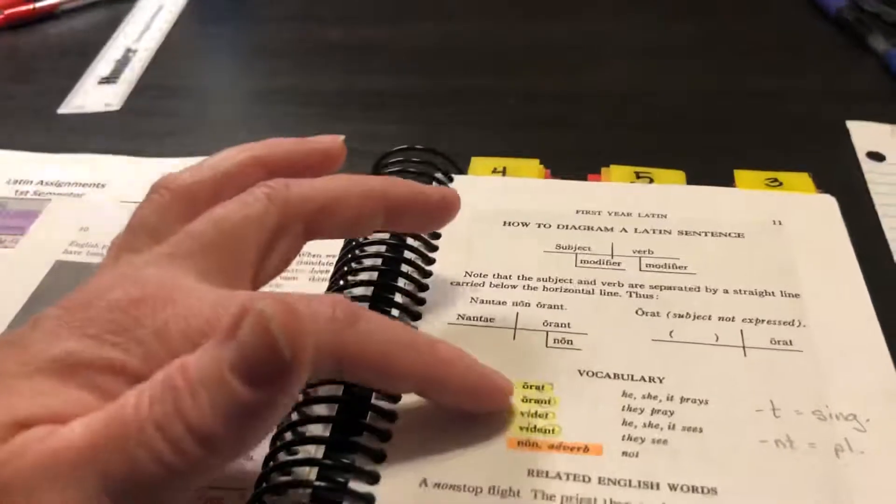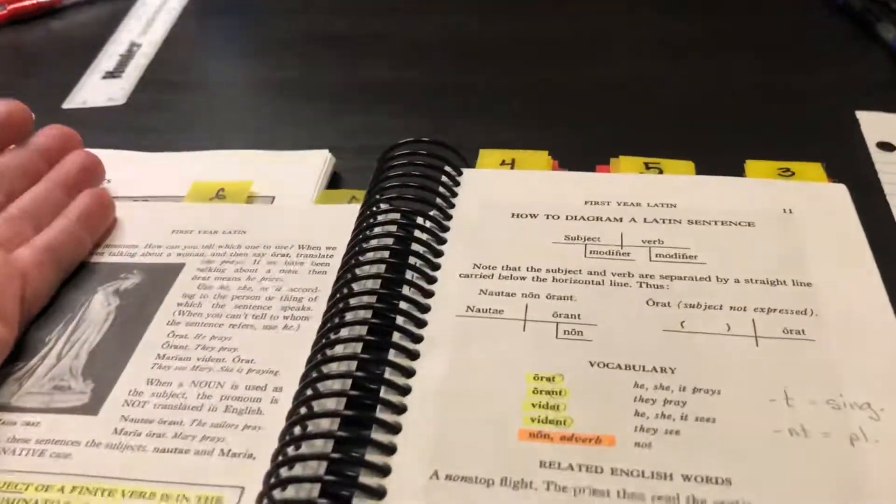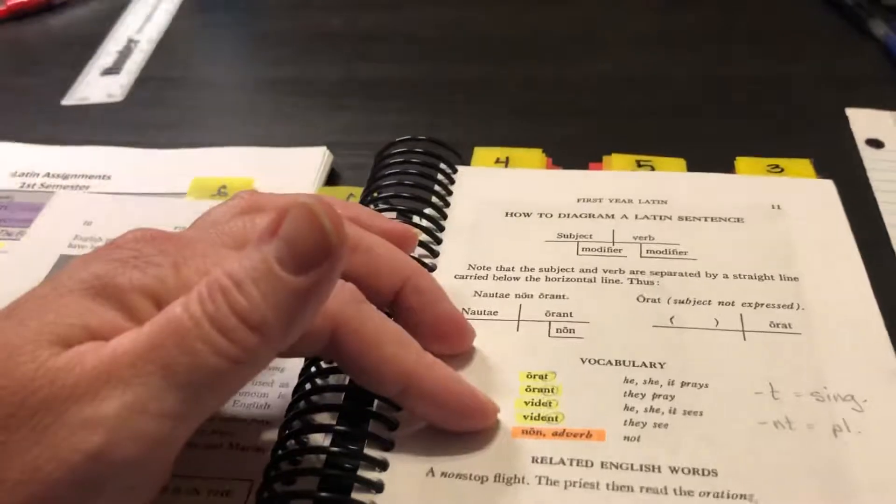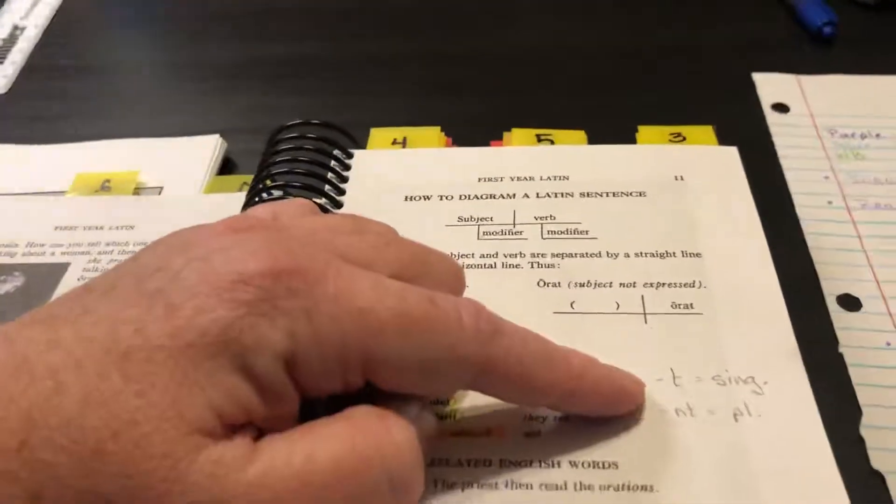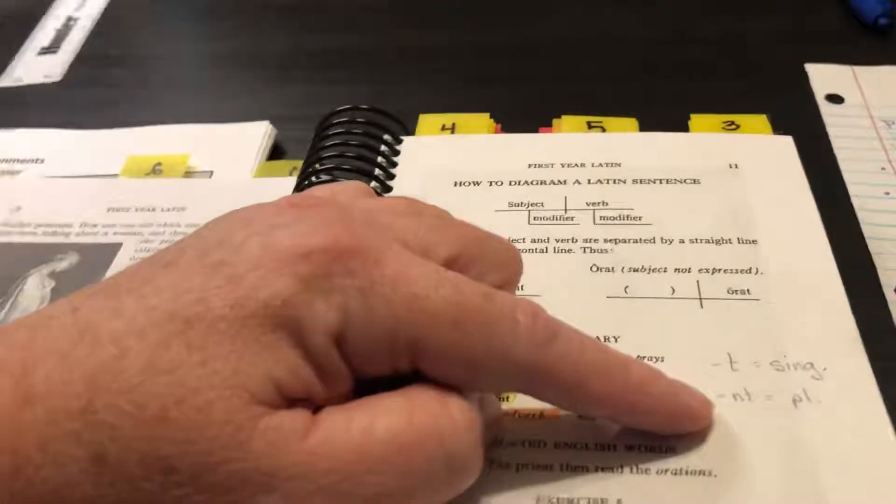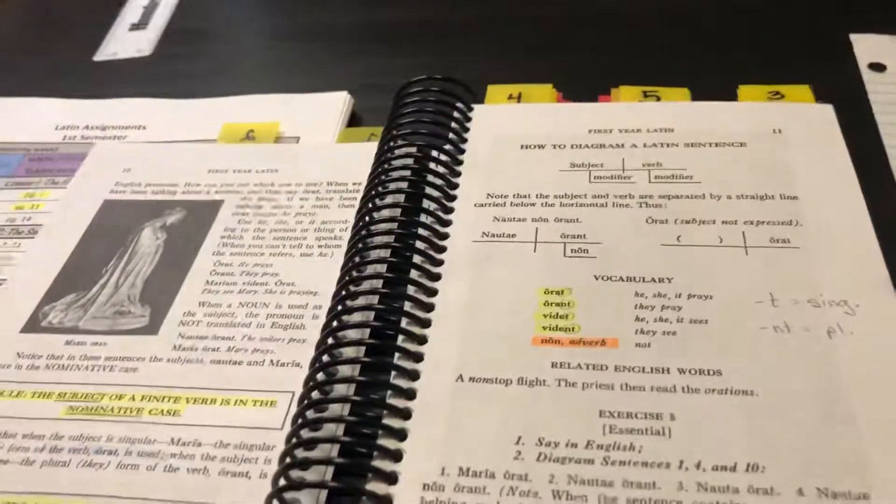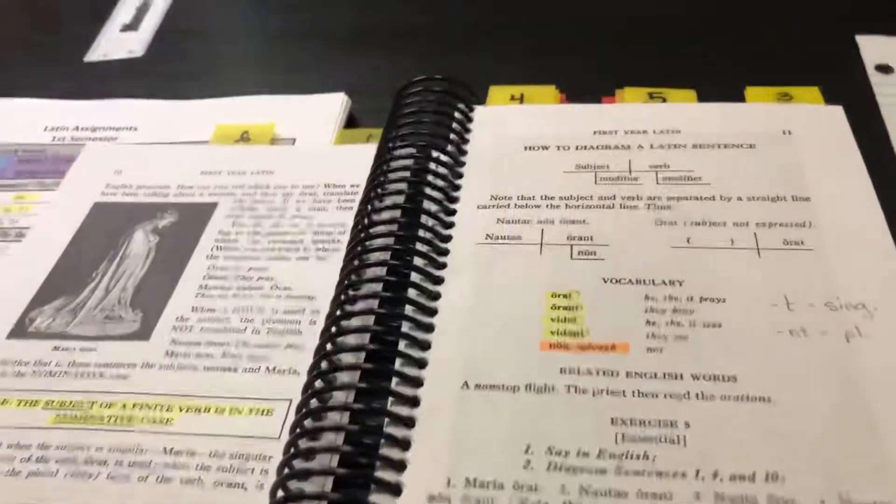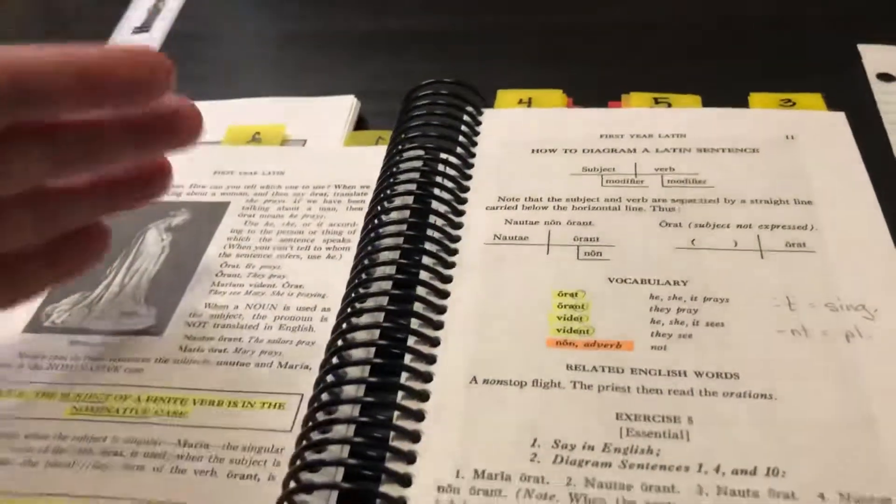And I'm like, based on the patterns that you see here, can you come up with a rule? And somebody will eventually figure out that T is for singular and NT is for plural. So I really want to try to avoid just telling them things. I want them to make the observations and try to arrive at the conclusions themselves.